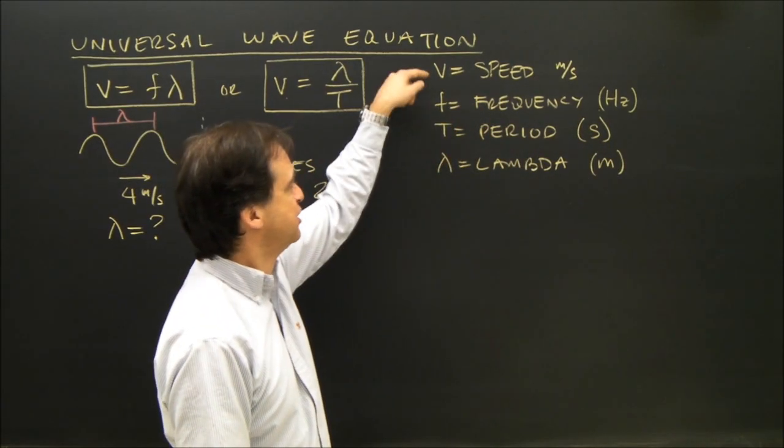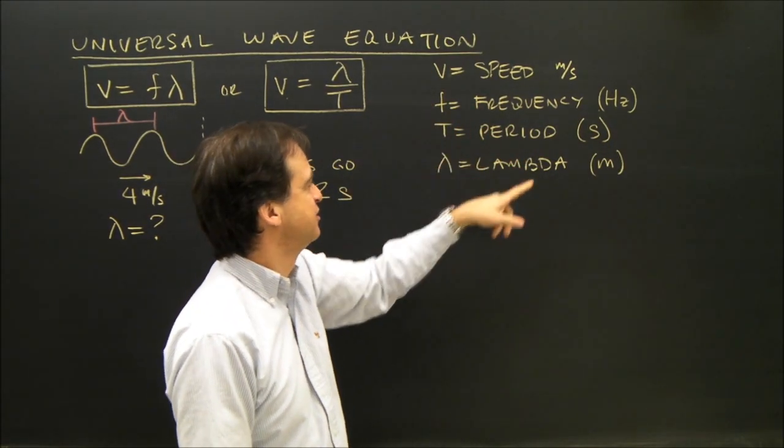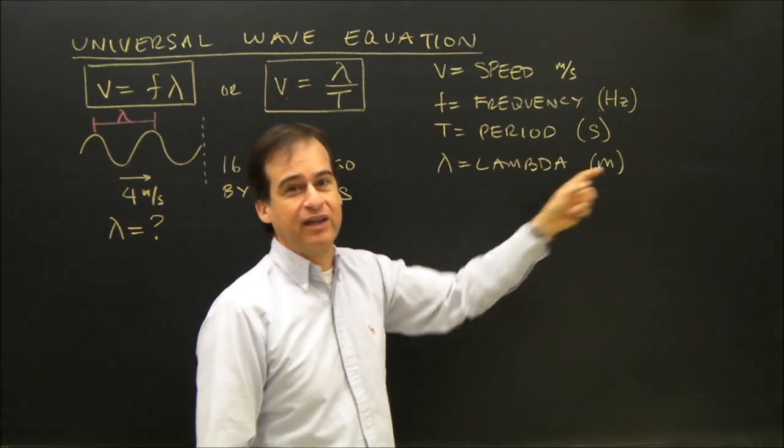So here are my variables. Speed, frequency in hertz, period in seconds, and lambda, the wavelength, would be in meters.